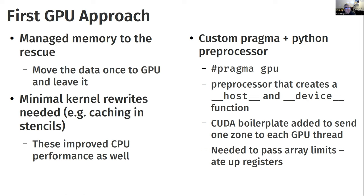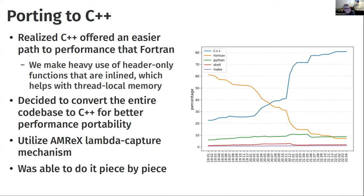The Fortran-based approach worked but was fragile — mixed-language code with a Python preprocessor was not efficient. It also required sharing more information and using more registers, limiting GPU performance. So we started porting to C++ and taking advantage of AMReX's GPU launch mechanism with lambda captures. This was done piece by piece.